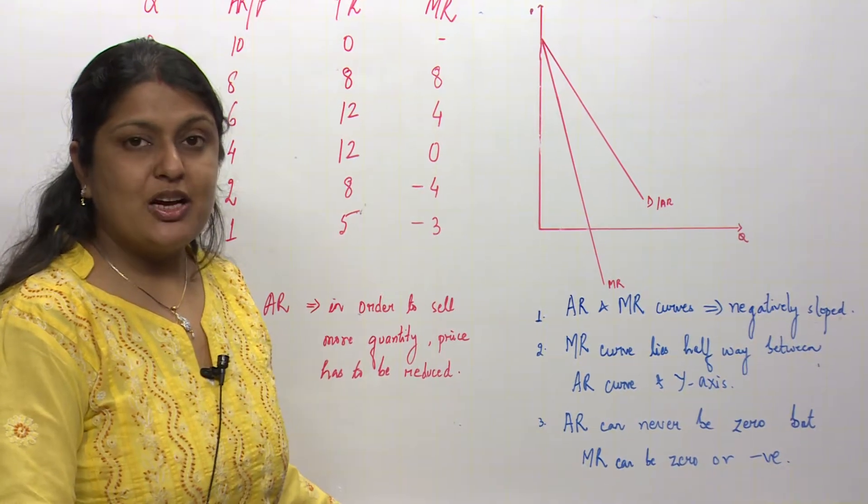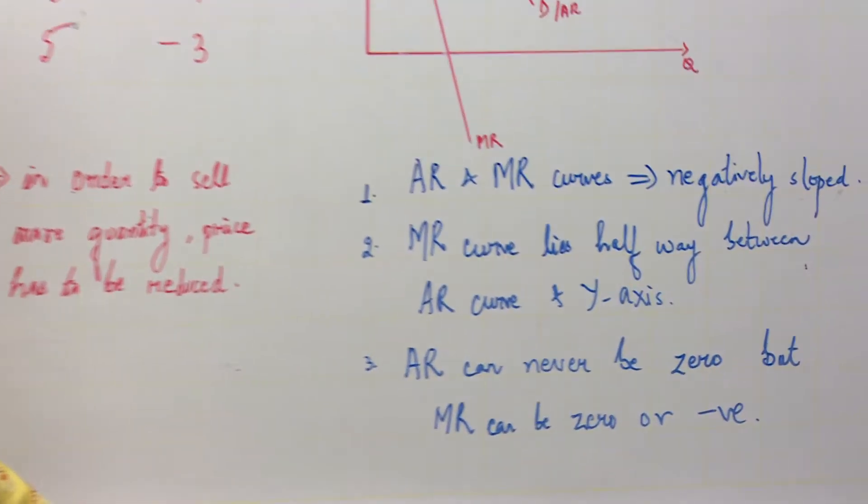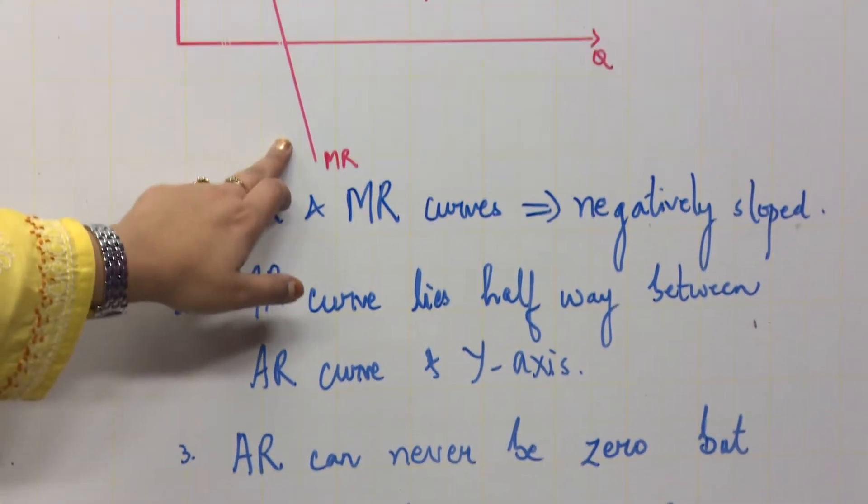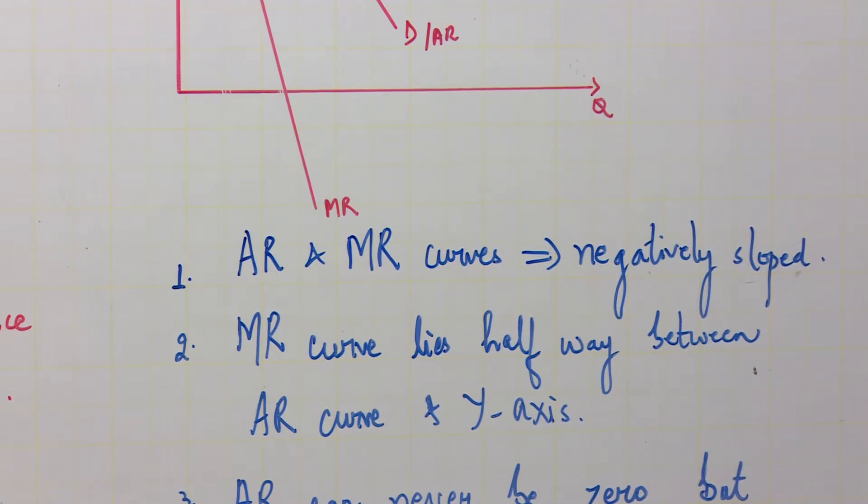MR can be zero or even negative. This is why the marginal revenue curve goes beyond and below the x-axis.